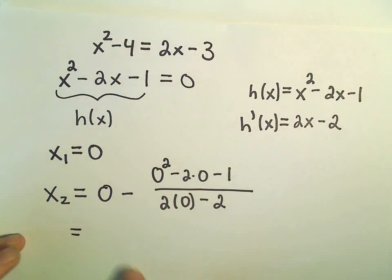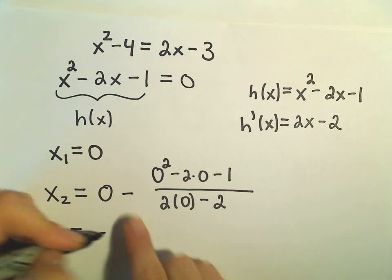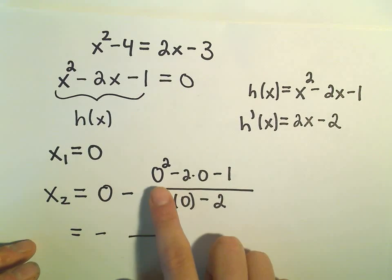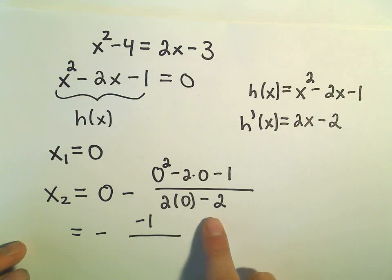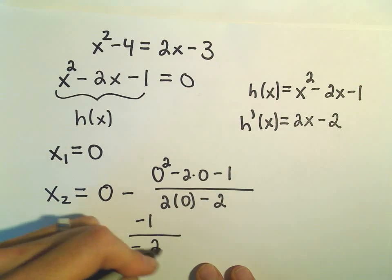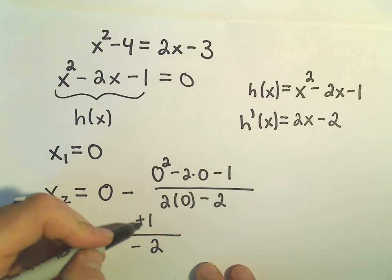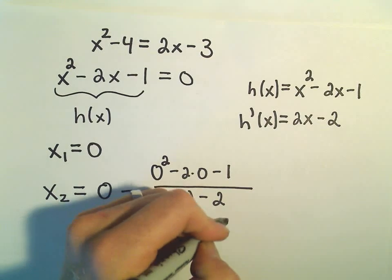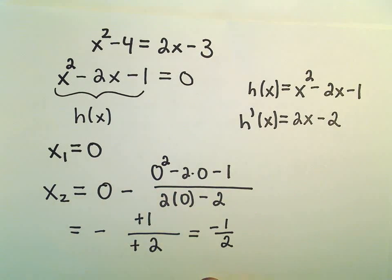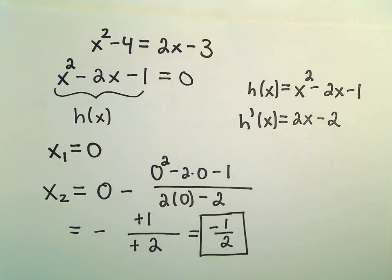So if we simplify this, we have 0 minus, well on top we would have 0 minus 0 minus 1. And then we would have 0 minus 2. So we would have negative 2. So the negative over the negative would make a positive. But we still have the minus sign from the beginning. So it looks like our second guess would be the number negative 1 half.